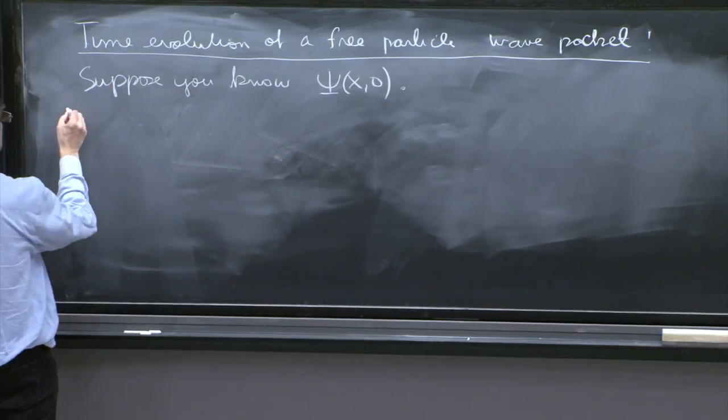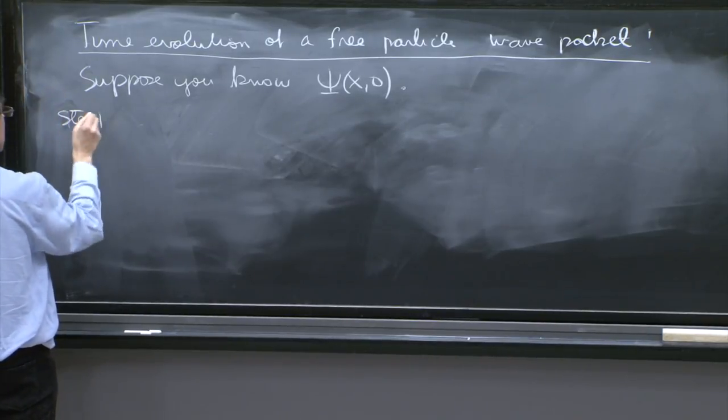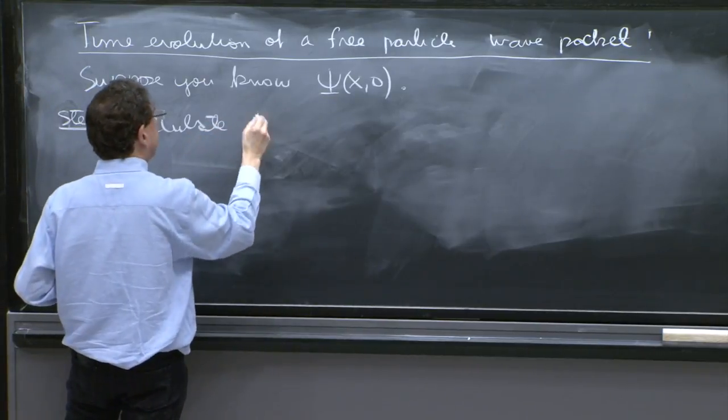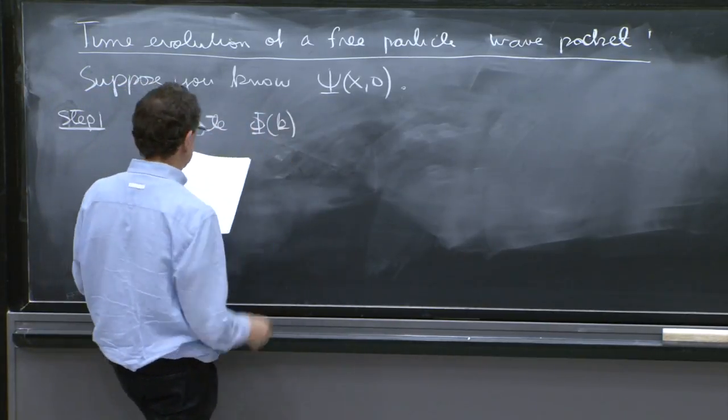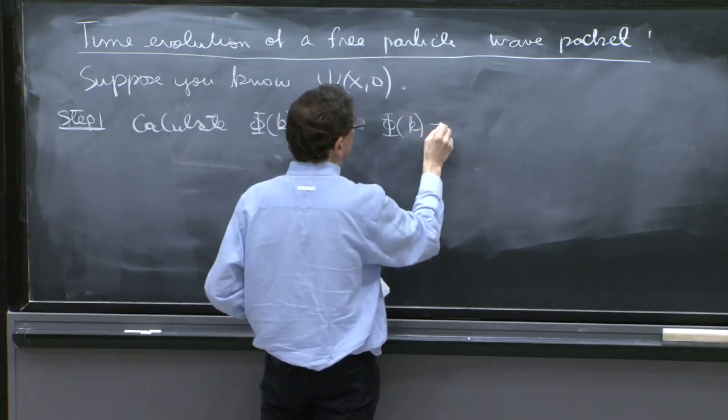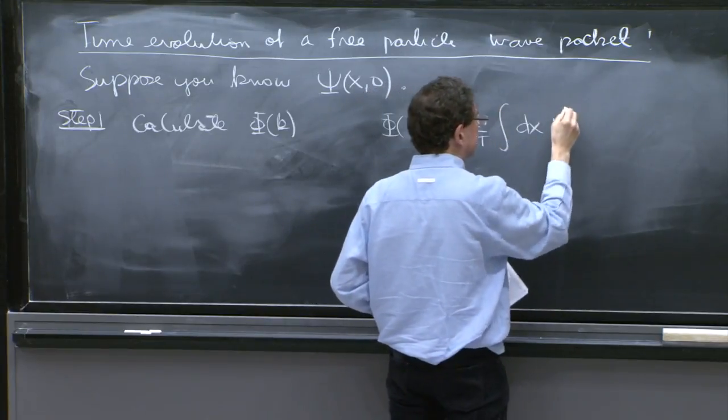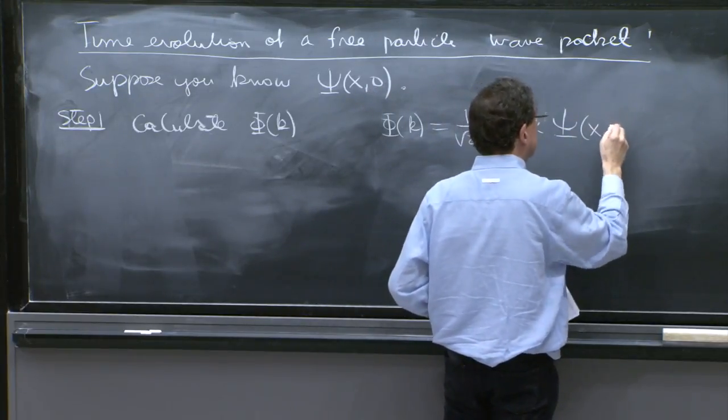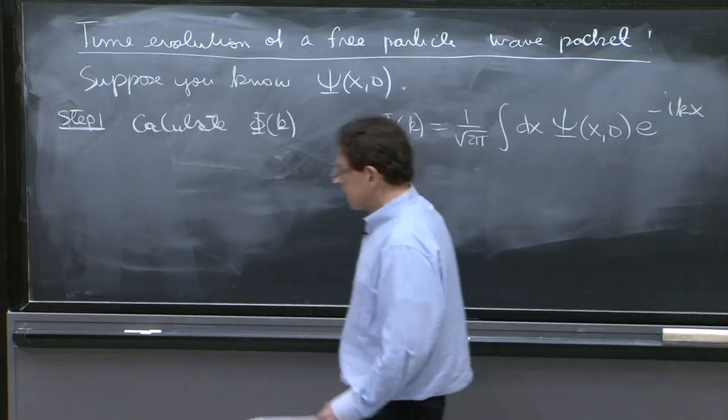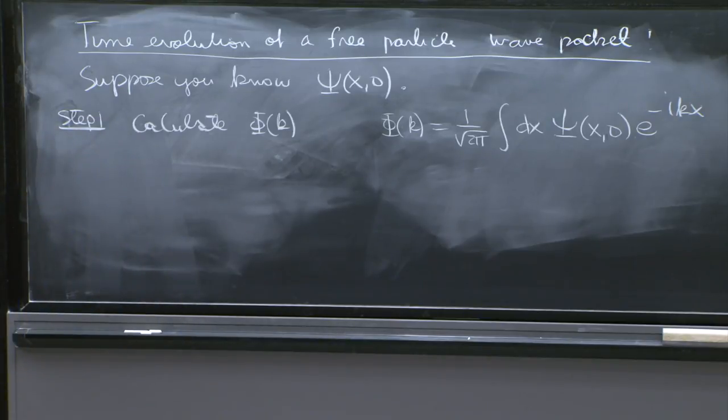Well, the first step, step one, is calculate φ(k). So you have φ(k) equals 1 over square root of 2π integral dx ψ(x,0) e to the minus ikx. So you must do this integral.